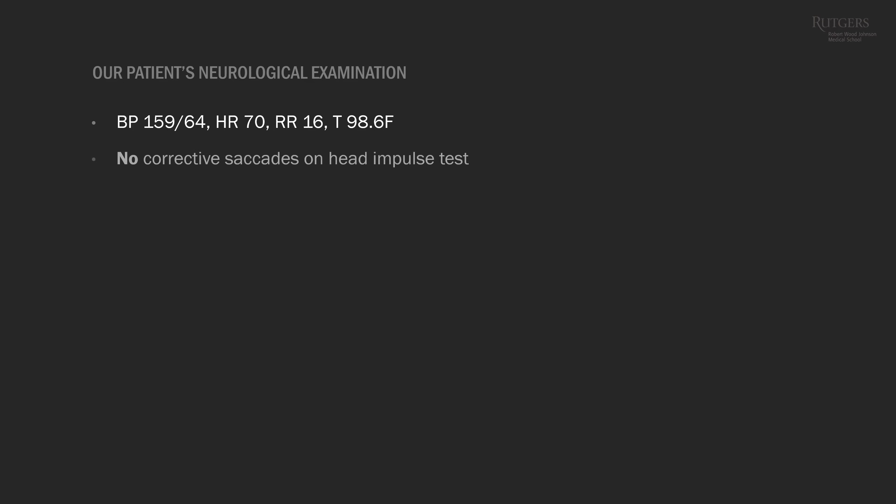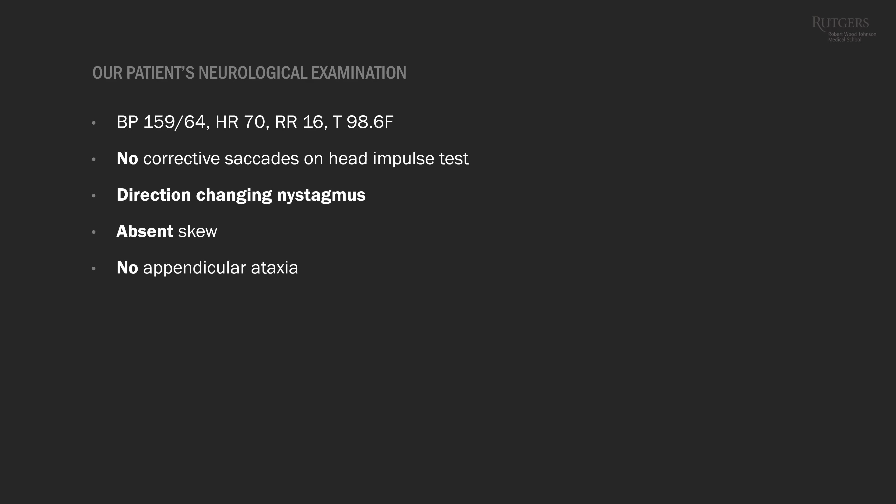On examination in the emergency department, he had elevated blood pressure, absent corrective saccades on head impulse test, present direction-changing nystagmus, and absent skew. There were no arm or leg ataxia or focal neurological findings, but the patient veered to the right when walking. What's the likely localization of this lesion?